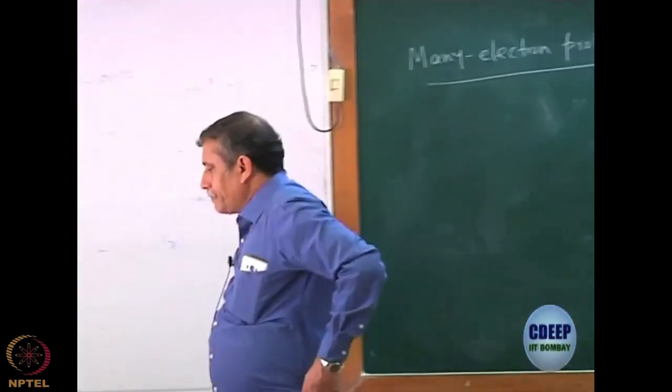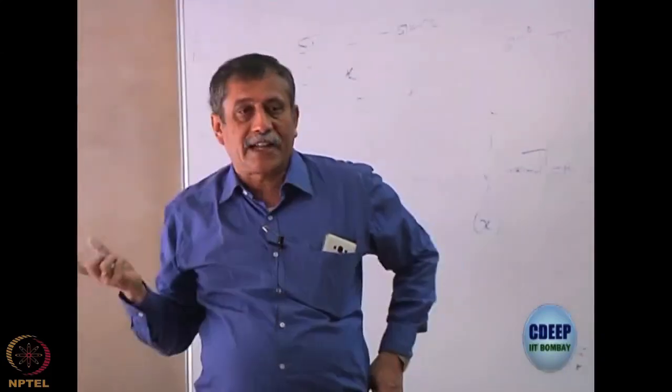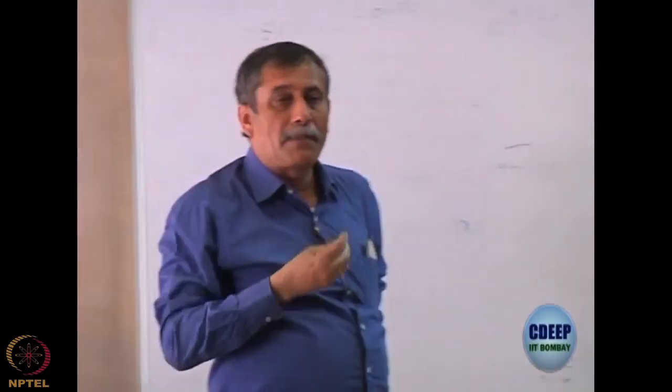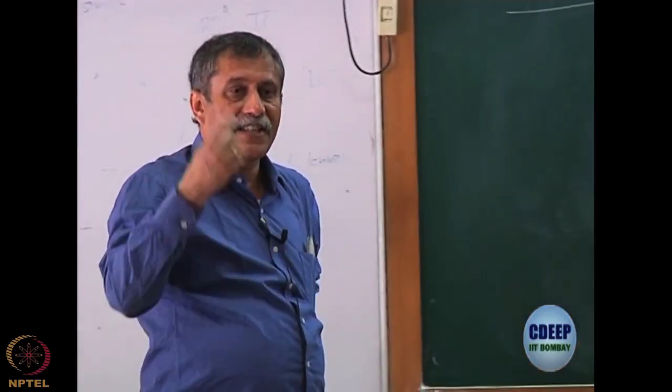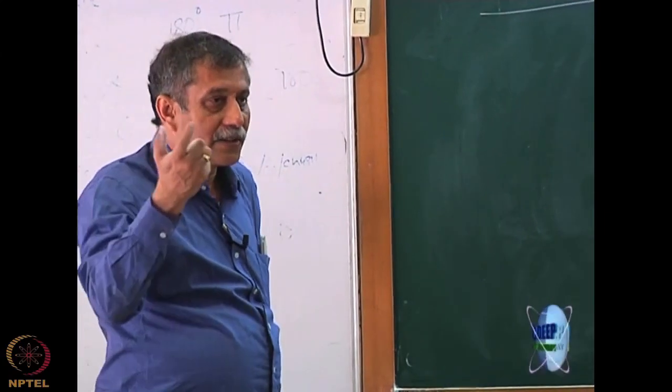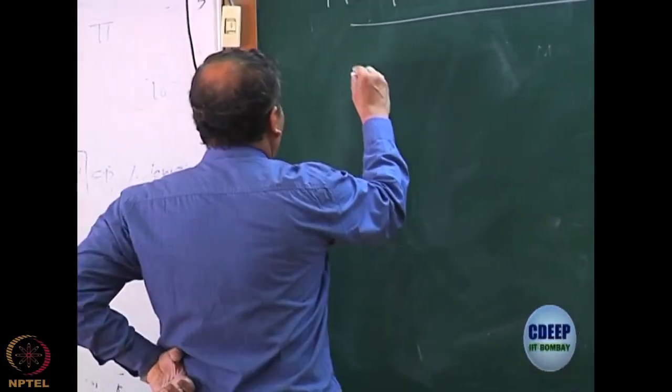For the many-electron problem, I first said that we need methods which are approximate because the problems cannot be solved. Just as I told yesterday, because of a term which is called 1 by Rij. I do not know if I mentioned yesterday, but the many-electron problems...